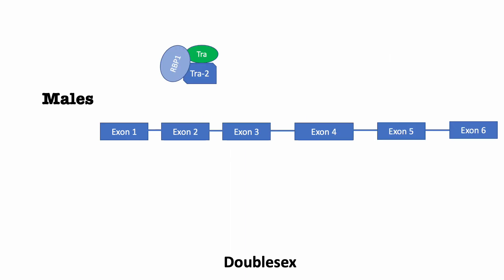In the females, transformer in turn regulates the alternative splicing of the double-sex pre-mRNA with the help of transformer 2 and RBP1, but not in the males.